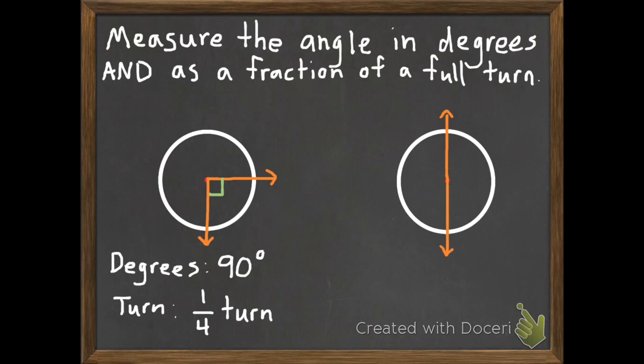My second one over here, we need to once again know the degrees and the turn. So if it's straight across, that's 180 degrees. And the turn would be one-half of a turn.